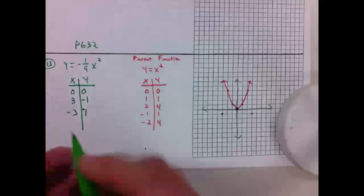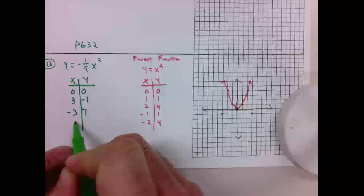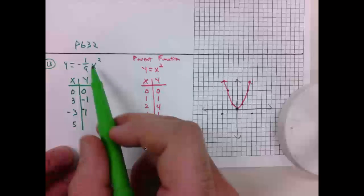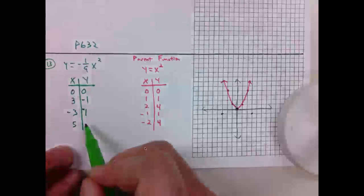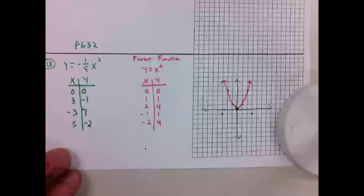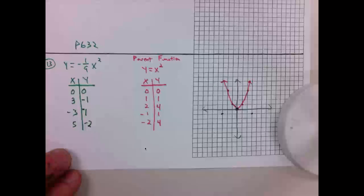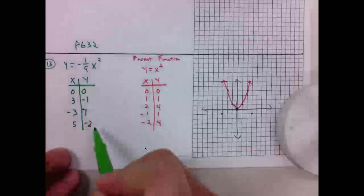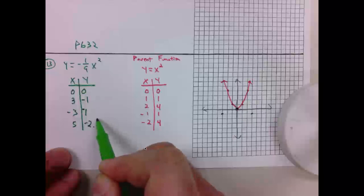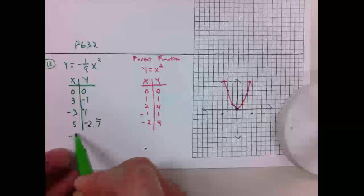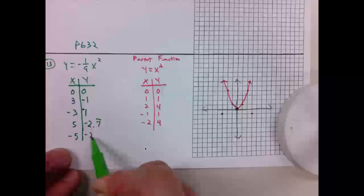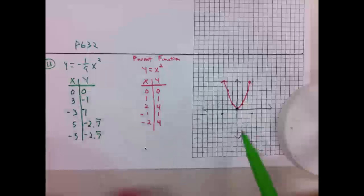Let's go with 5. Positive 5, 5 squared is 25. 25 over 9 is negative 2 and 7/9. So it's negative 2.7 repeating. And so negative 5 will be that as well. Negative 2.7 repeating.